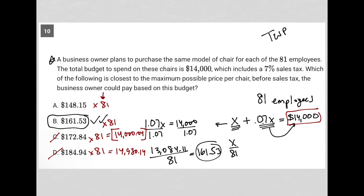They may say choice C is a very good answer, it's pretty much $14,000. But that's why choice C would not work, because we're at $14,000 after sales tax, and these values here are for the price per chair before sales tax.